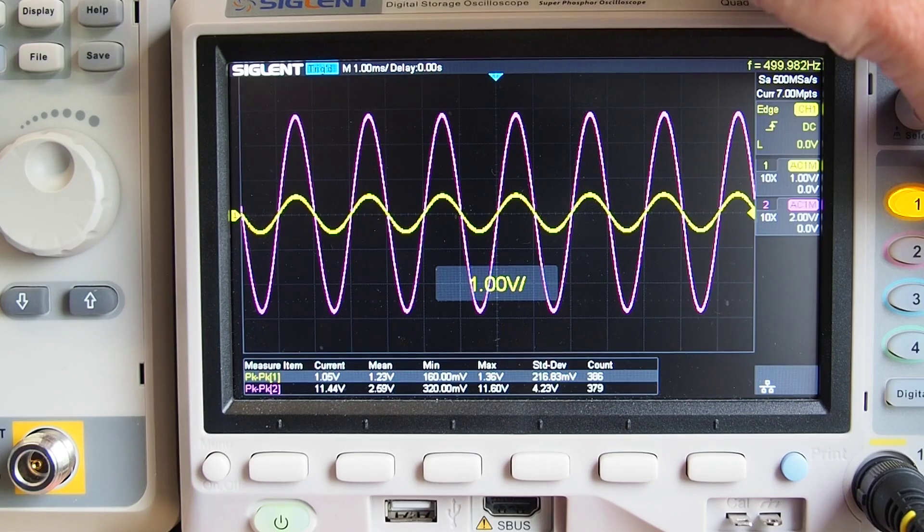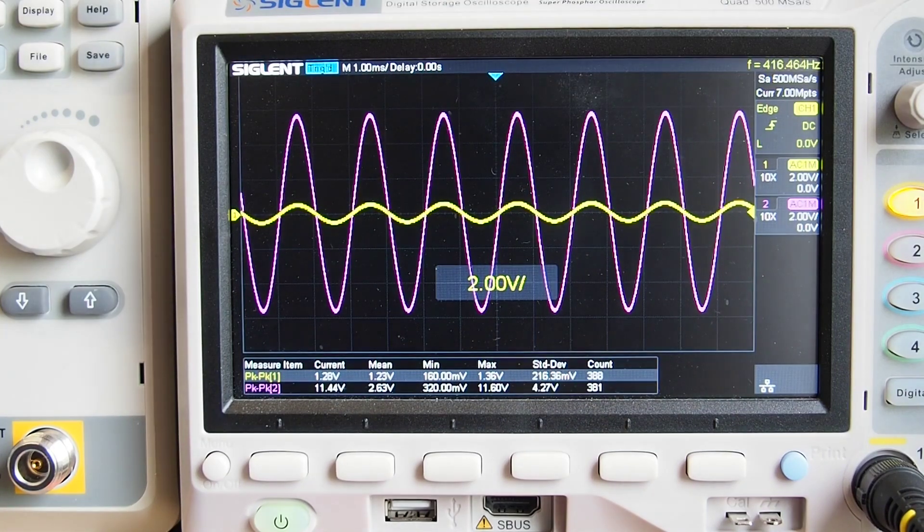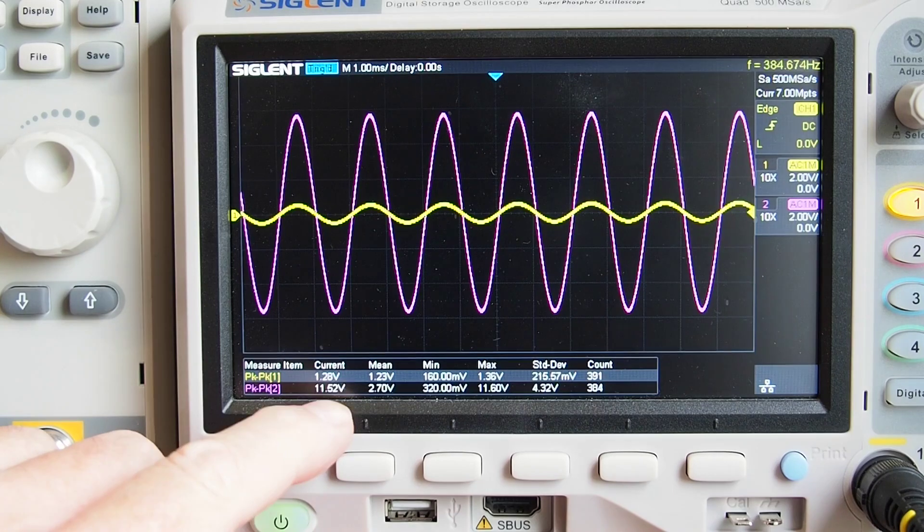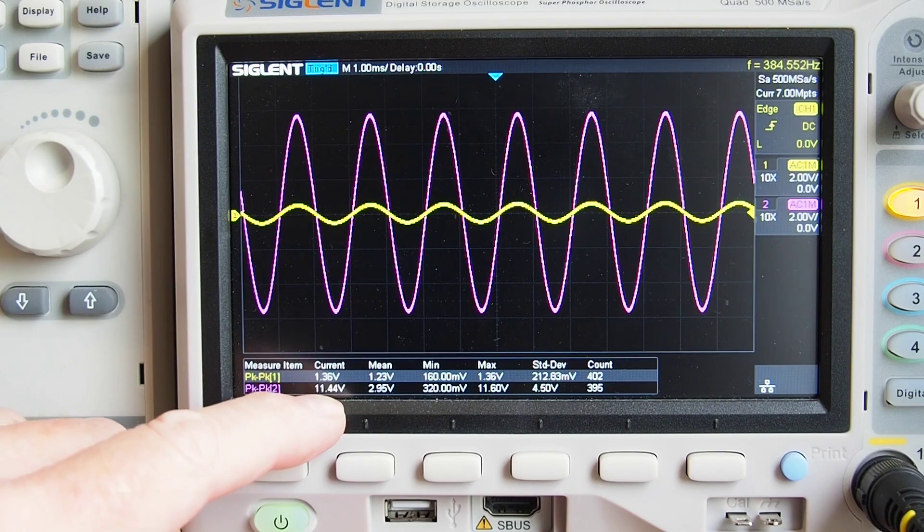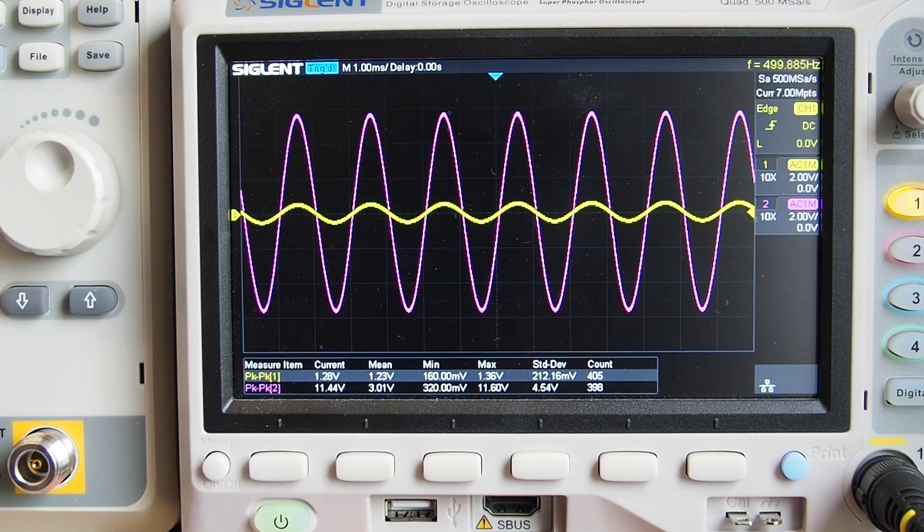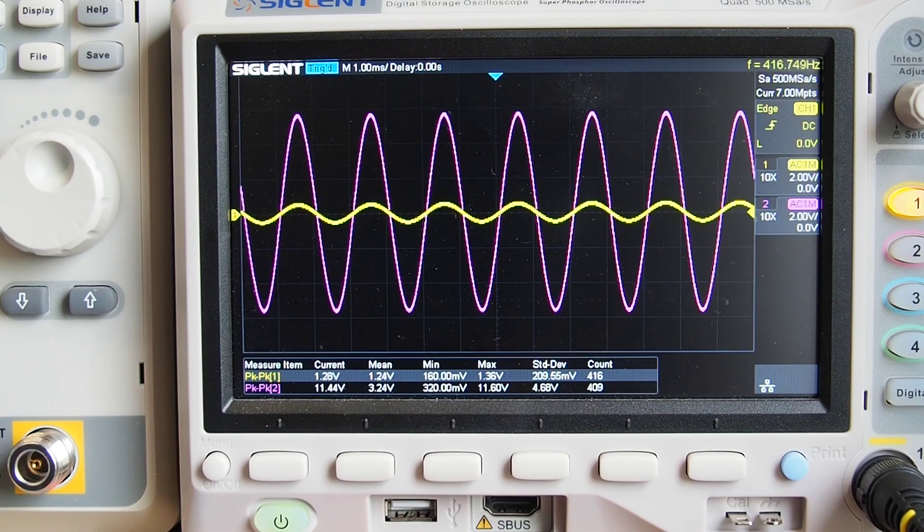So let's go back to 2 volts per division. Okay, that's the gain of the circuit. It's saying peak to peak voltage of about 11 and a half, something like that. Remember we said the gain was about 11, so it's somewhere near according to the maths. That's with a 100k resistor in the feedback circuit.